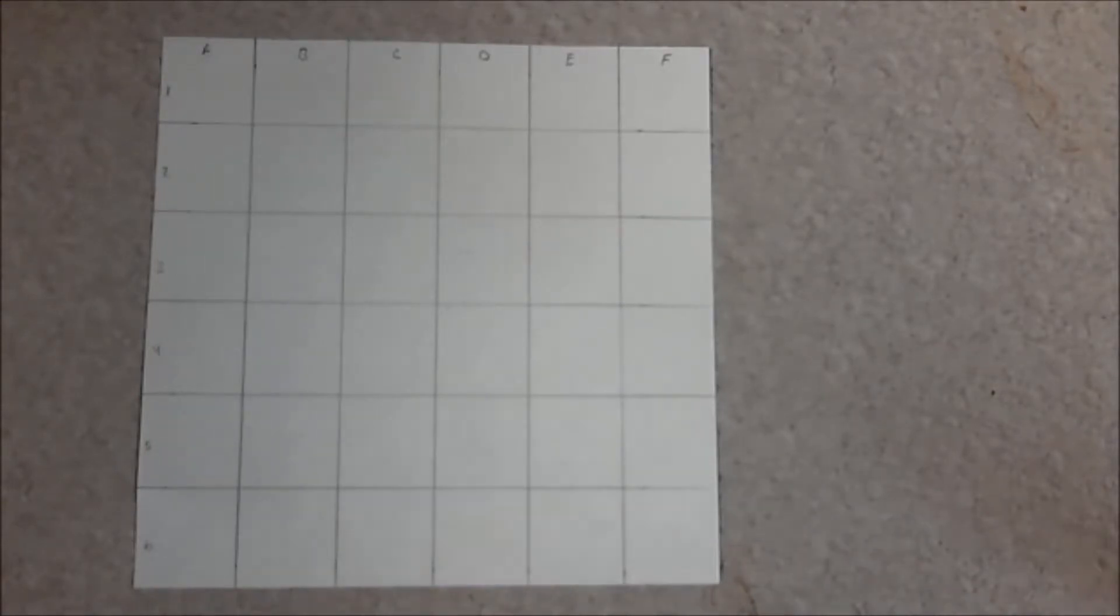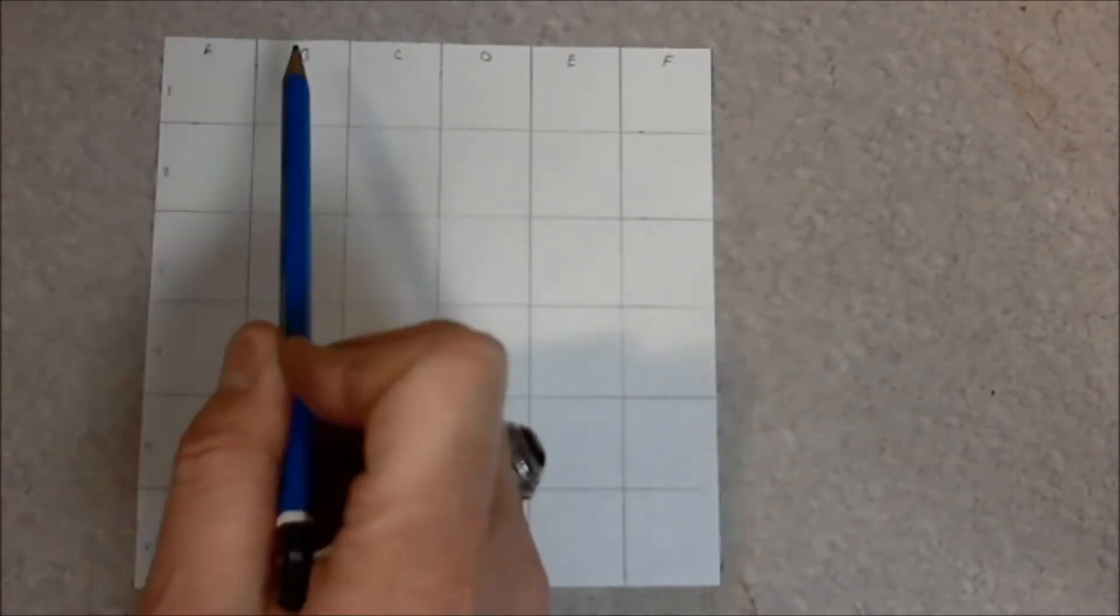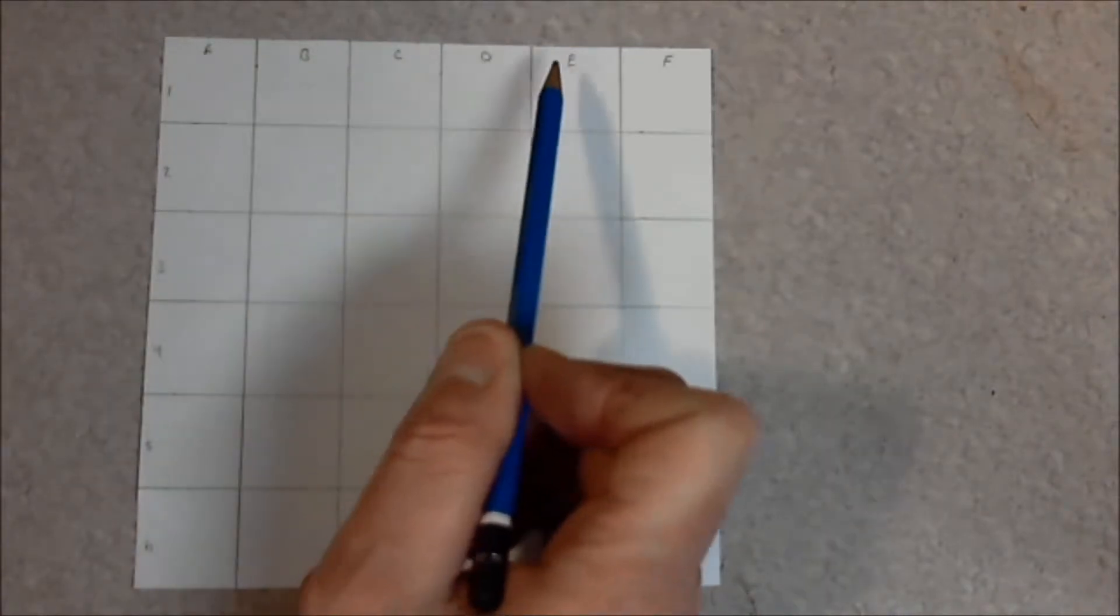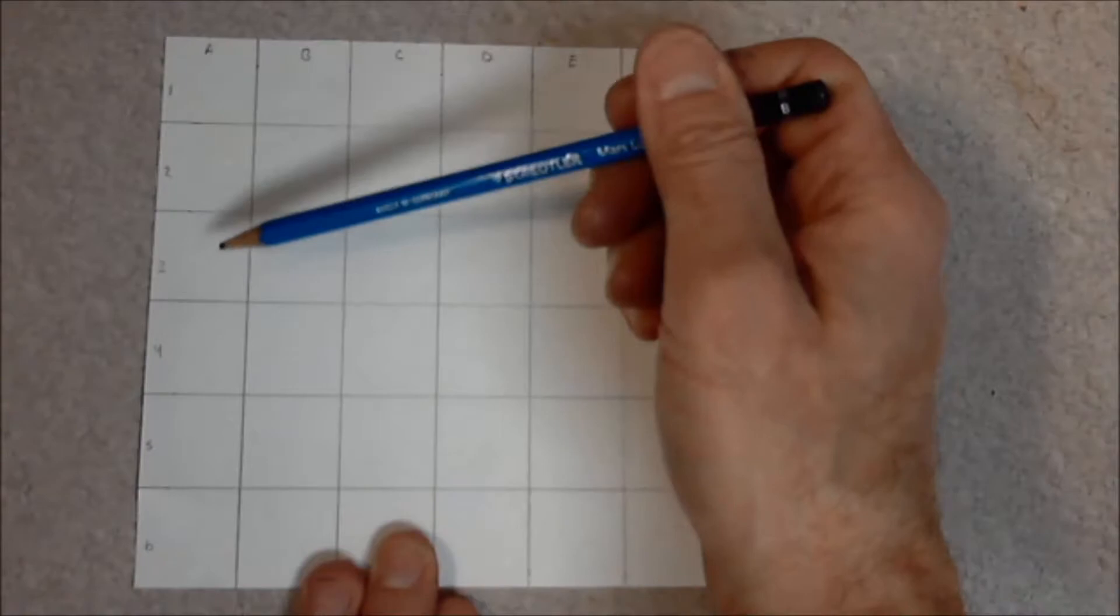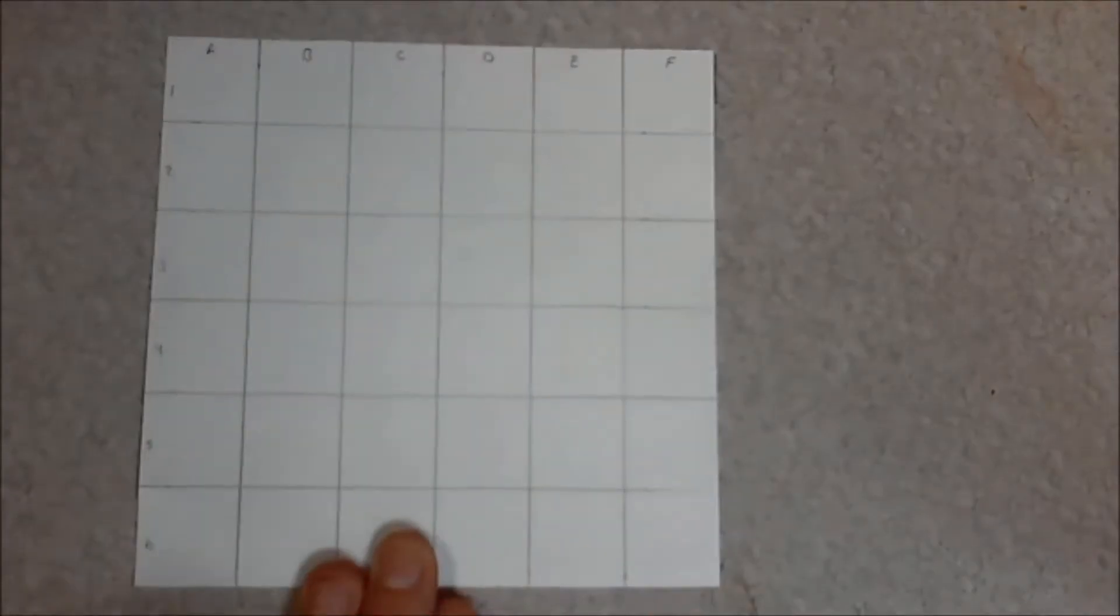You can also see that across the top I've labeled it A, B, C, D, E, and F. And along the side, one, two, three, four, five, and six.